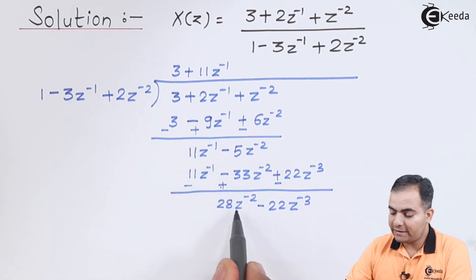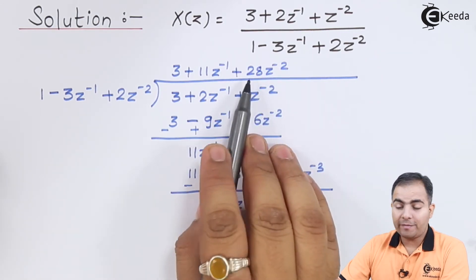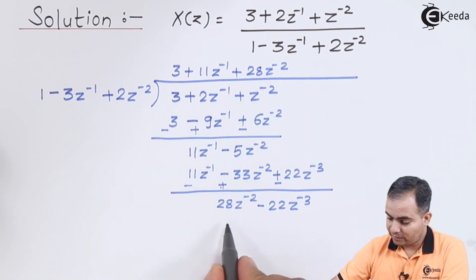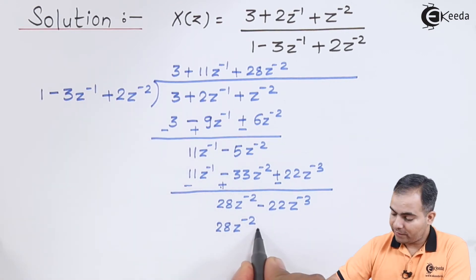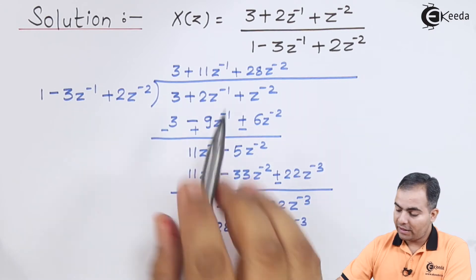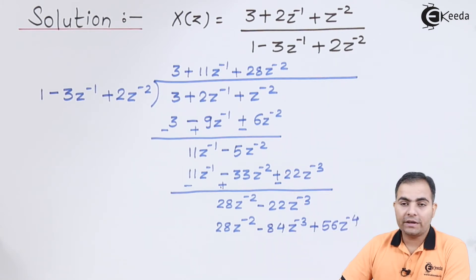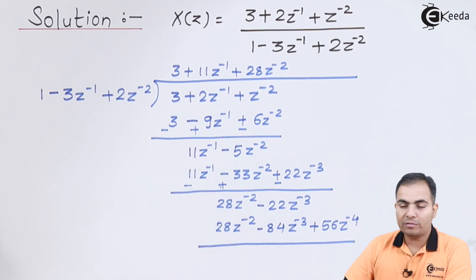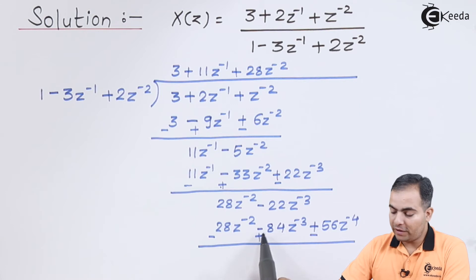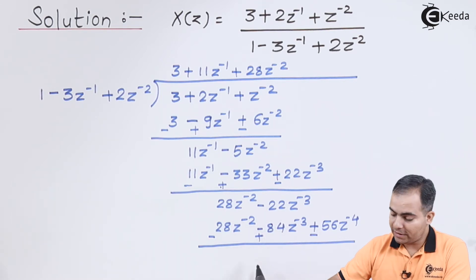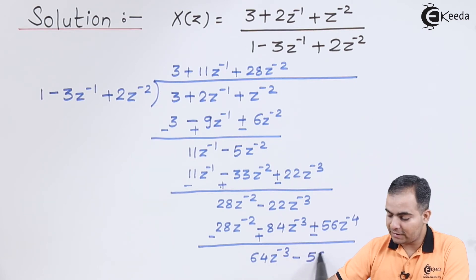Again, if we multiply 1 to get 28Z⁻², we multiply 28Z⁻² with the whole denominator. 28 times 3 is 84, so we write minus 84Z⁻³. And 28 times 2 is 56, so we write 56Z⁻⁴. We change the sign again so 28Z⁻² cancels. The 84 sign becomes plus, so plus 84 minus 22 gives 62Z⁻³. The last term sign changes to minus, giving minus 56Z⁻⁴.